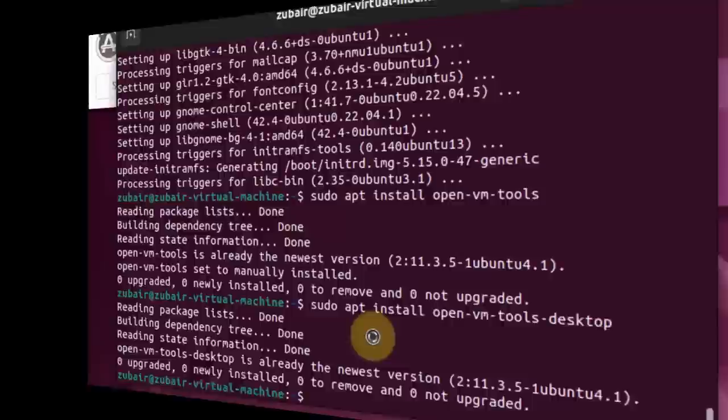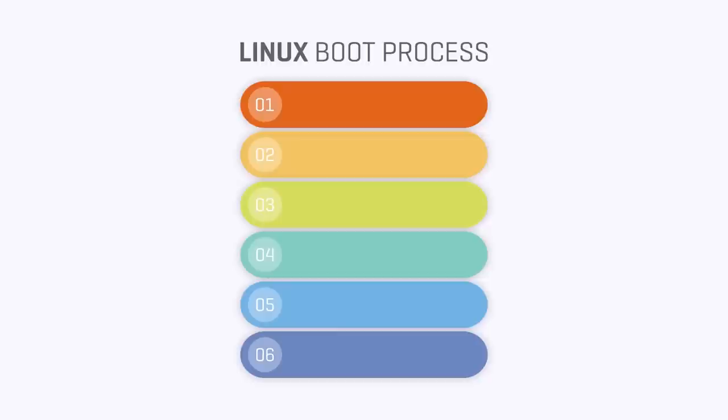Now let's talk about the Linux boot process. In Linux, there are six steps or stages in a typical boot process. It starts with BIOS — Basic Input Output System — which is responsible for loading and executing the MBR or Master Boot Record boot loader. On turning on the computer, BIOS performs an integrity check on the hard drive (HDD or SSD), then looks for the boot loader program on a USB disk or CD-ROM, loads it into memory, and gives control of the system.